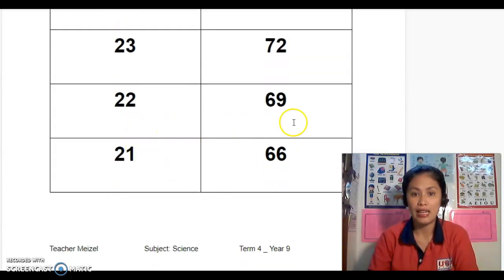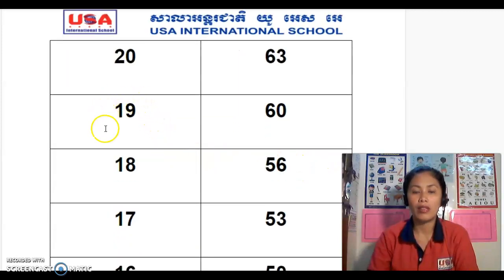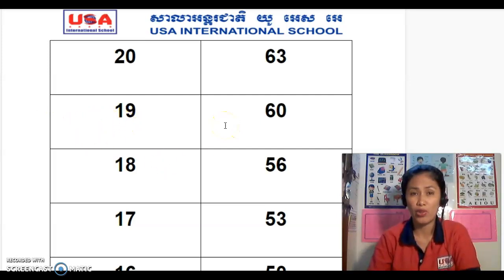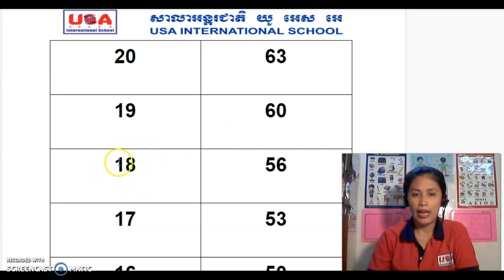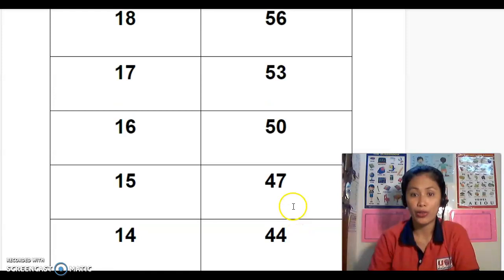If your score is 22, the percentage is 69. If your score is 21, the percentage will be 66. If your score is 20, it's 63. 19 gives 60. Just go back and review how you will be graded. If your score is 18, your percentage score will be 56. 17 gives 53, 16 gives 50, and if your score is 15 your percentage score is 47.